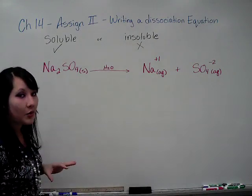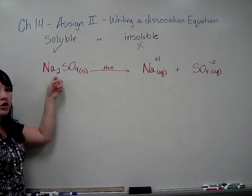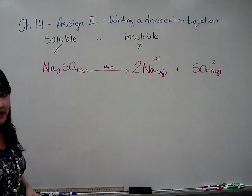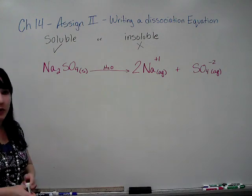You do have to balance the equation. And the fact that we have two sodiums on the left means you need a coefficient of two for sodium on the right hand side. And that's a dissociation equation.